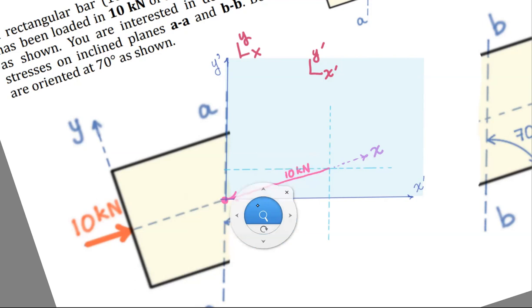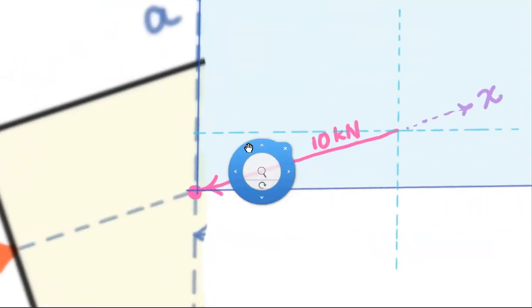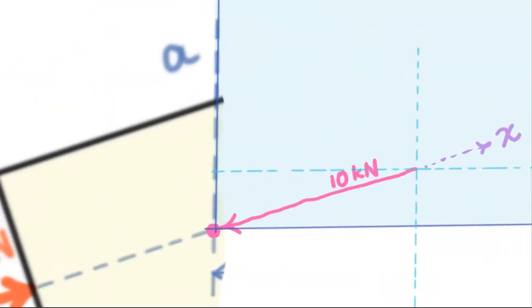At this point in the process, all we're doing is breaking down a force vector into its components like we have so many times before. One thing to remember here. So this is a common error. You want both of the forces that you construct in the X prime Y prime coordinate system, they must go through that centroid of the cut plane.